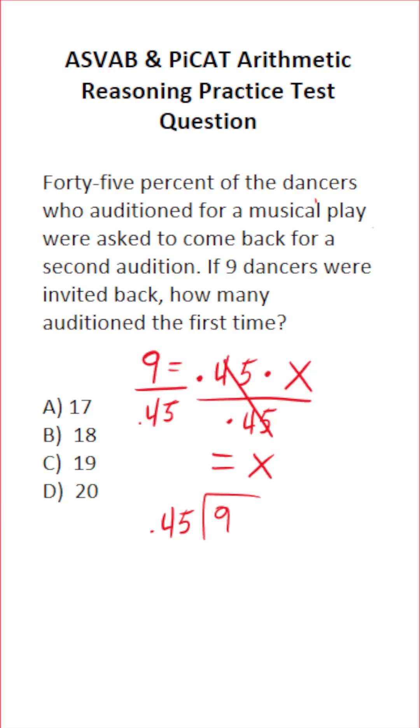You can't do long division with the decimal outside the division bracket. So we need to take this decimal and shift it one, two times to the right to make that 45. And at the same time, we're going to take the decimal in nine, which is right here, and shift it a corresponding number of times—one, two times—to make 900. Now don't panic.